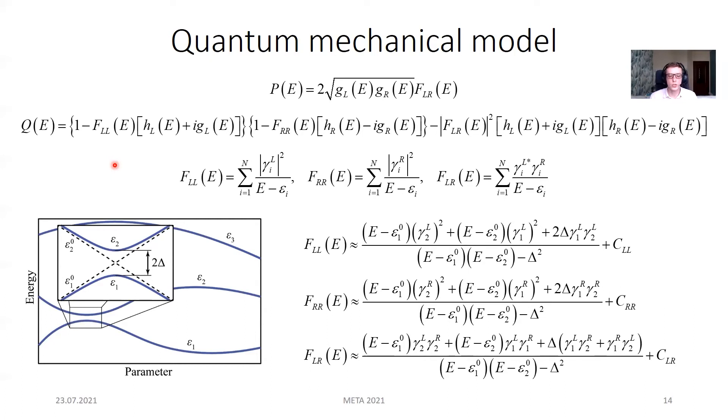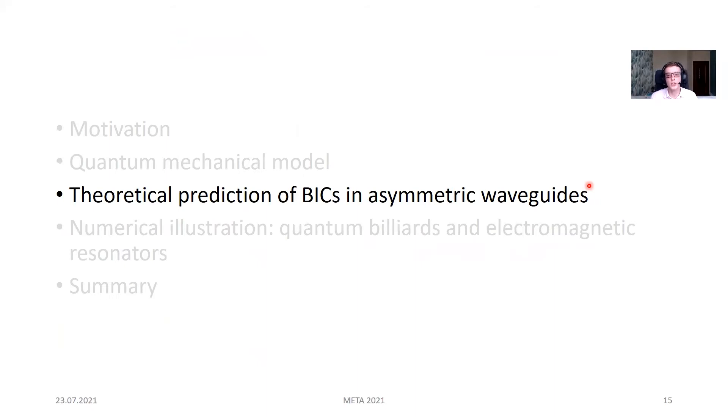In the vicinity of the close energies epsilon-1 and epsilon-2, we can approximate summation in functions F by two terms corresponding to these states and take all the rest states as some constants. In this case, we get functions P and Q as rational functions. And then, one can easily analyze their roots in order to derive conditions for BIC formation.